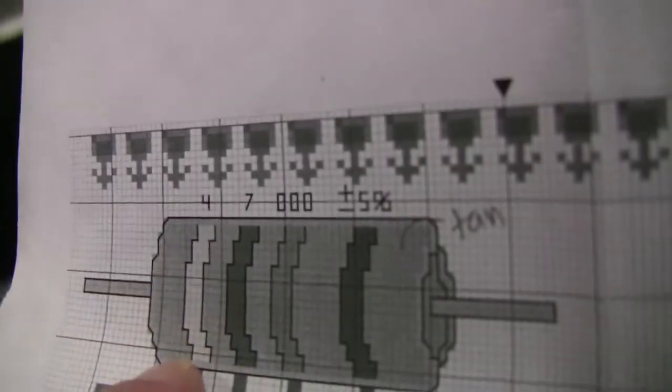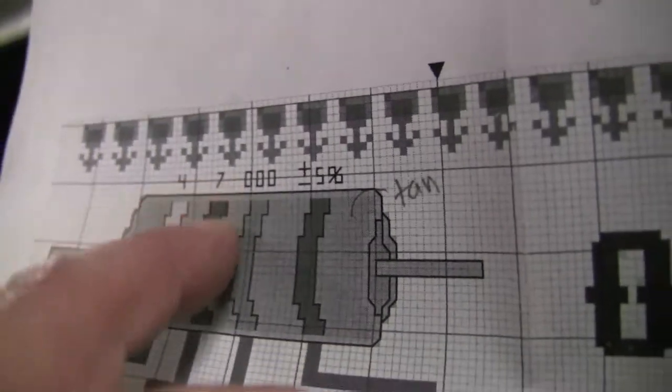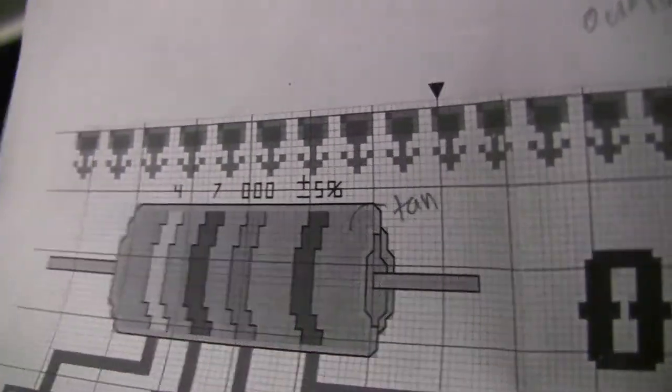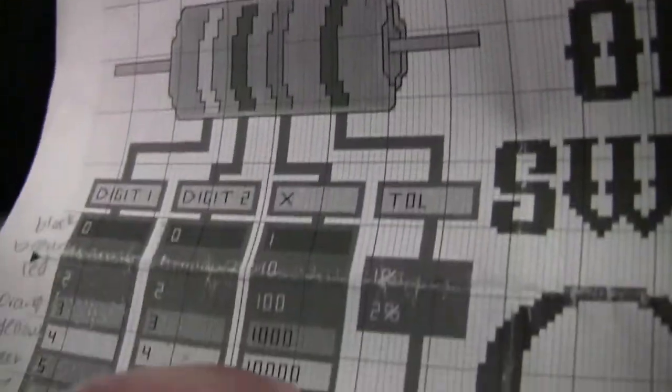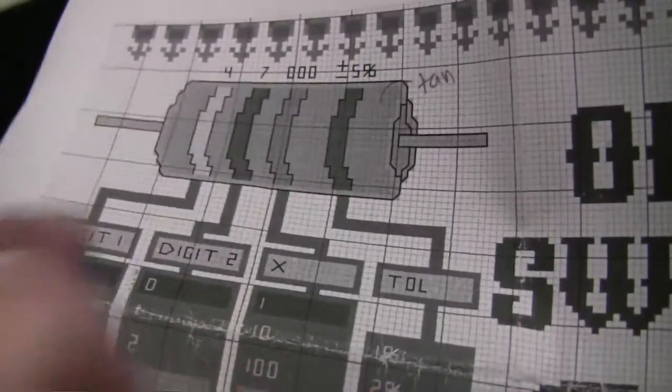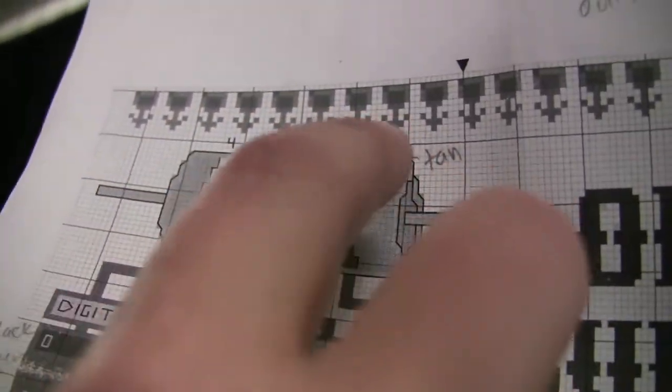The colors refer to numbers. The first stripe would be yellow, the second stripe would be purple, and the third stripe would have three zeros. That would make it a 47,000K ohm resistor.